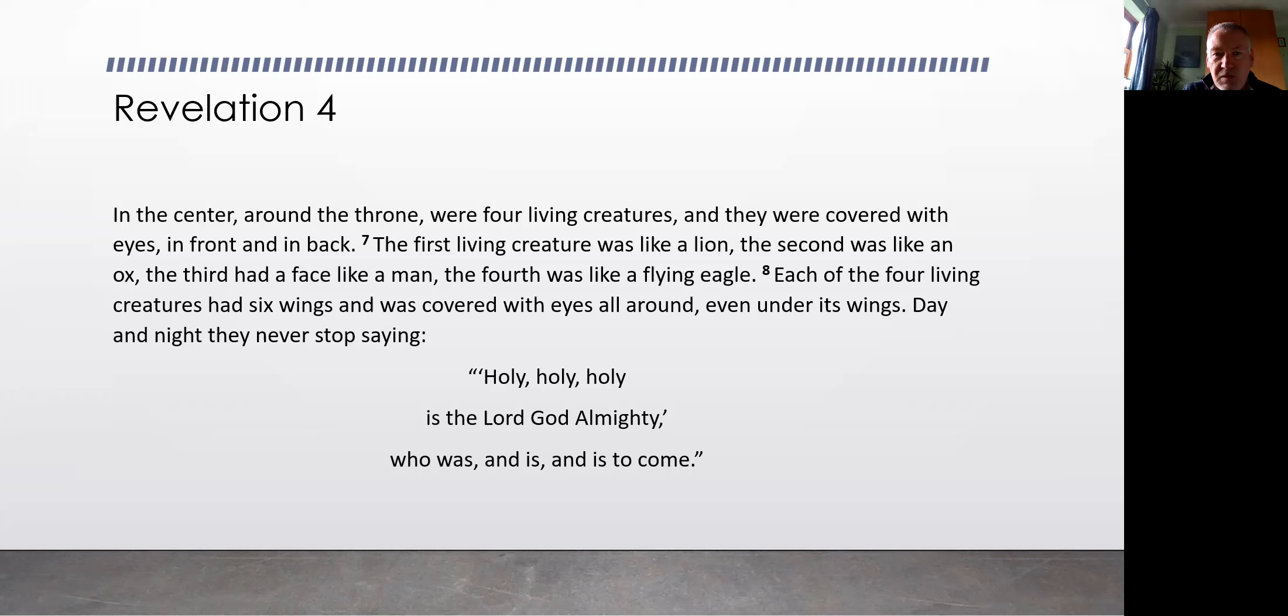The first living creature was like a lion, the second was like an ox, the third had a face like a man and the fourth was like a flying eagle. Each of the four living creatures had six wings and was covered with eyes all around, even under its wings. Day and night they never stopped saying,